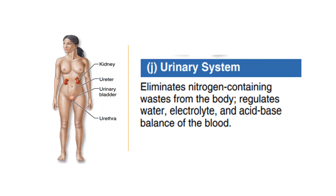The urinary system removes nitrogen-containing waste from blood and flushes them from the body in urine. This system, often called the excretory system, is composed of the kidneys, ureters, bladder, and urethra. Other important functions include maintaining the body's water and salt balance (electrolyte balance), regulating the acid-base balance of the blood, and helping to regulate normal blood pressure.